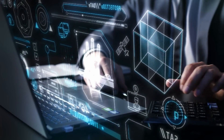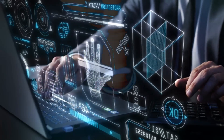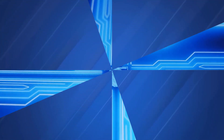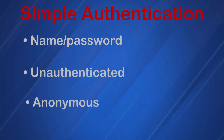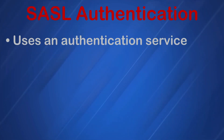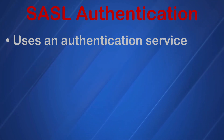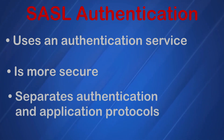You must set up LDAP to authenticate credentials against the information stored in directory services. A bind method sets the authentication state for an LDAP session, and you can use one of two options. Simple authentication uses name and password authentication, unauthenticated authentication, or anonymous authentication — most of the time a name and password create the bind request sent to the server. Simple Authentication and Security Layer, or SASL, uses a different authentication service such as Kerberos to bind to the LDAP server, providing additional security because the authentication method is separated from the application protocols.